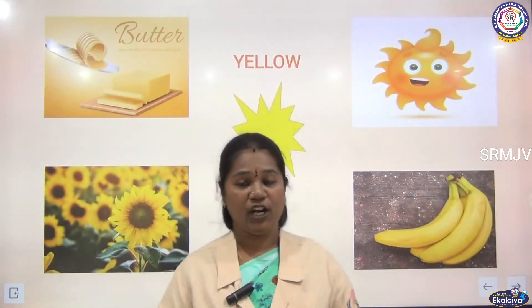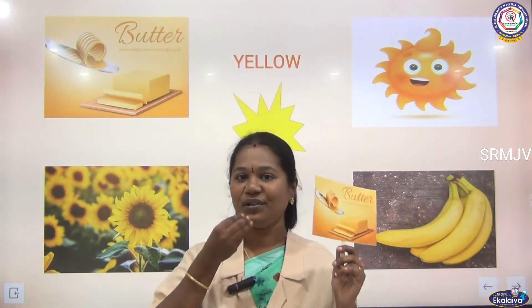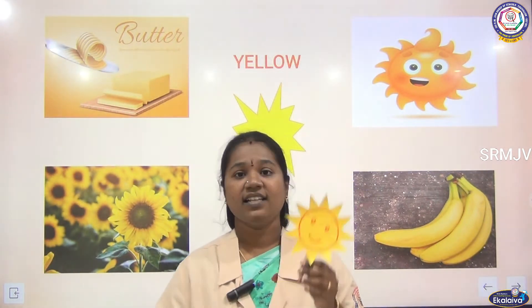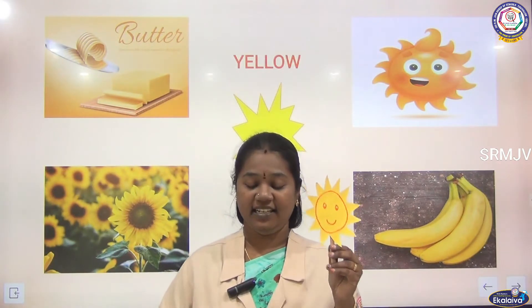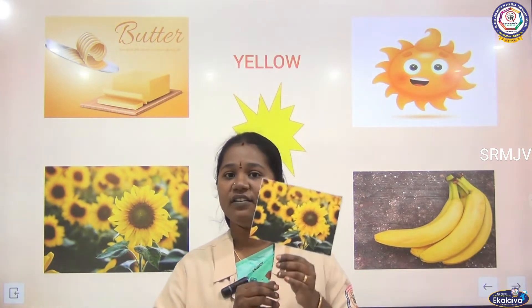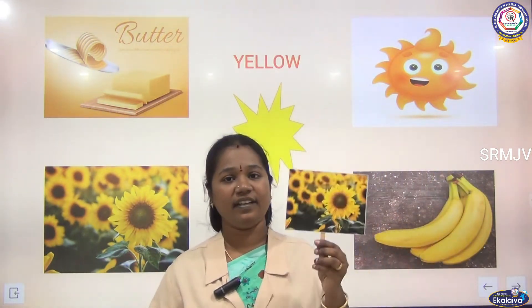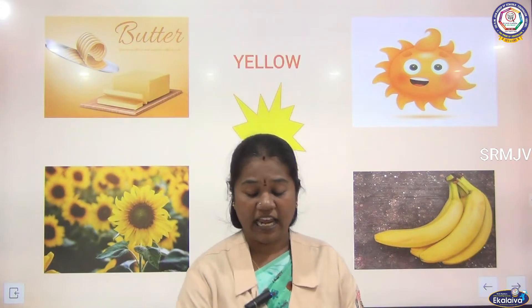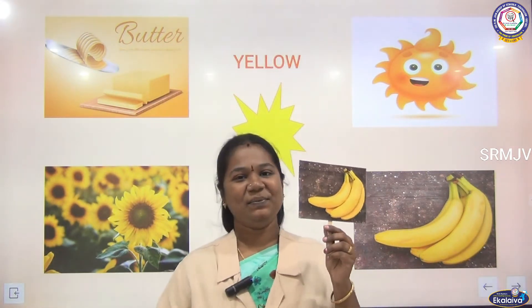Yellow is the butter we love to eat. Yellow is the sun that gives us heat. Yellow is the sunflower out in the field. Yellow is the slippery banana peel.